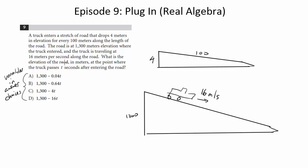What is the elevation of the road in meters at the point where the truck passes t seconds after entering the road? So we want to know at what elevation it's not going to be 1300 but at what elevation are we going to be after t seconds in this scenario.